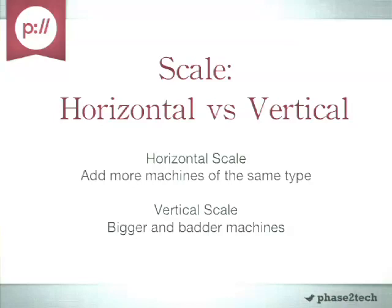Vertical scale is just making the machine bigger and stronger — adding more memory, more capacity, more resources to the same machine. The downside of horizontal scale is cost: it's more costly to create more machines, to instantiate more cloud servers. With vertical scaling, no matter how much memory or how many CPUs you add, you're going to hit a wall at some point.